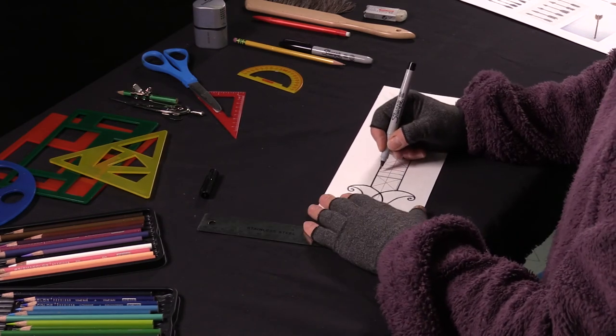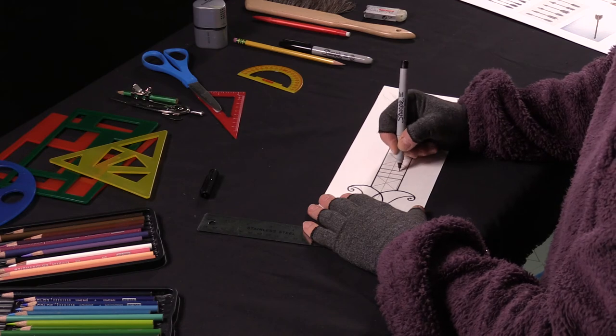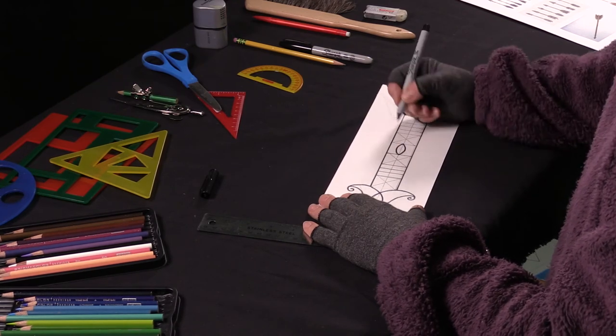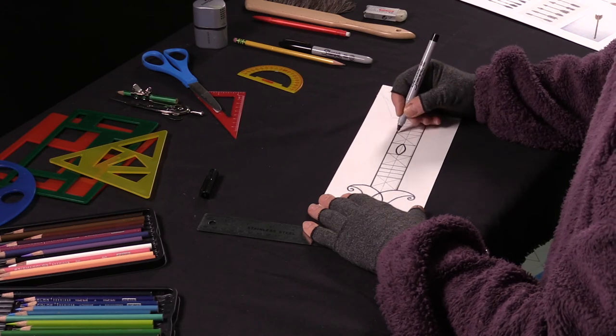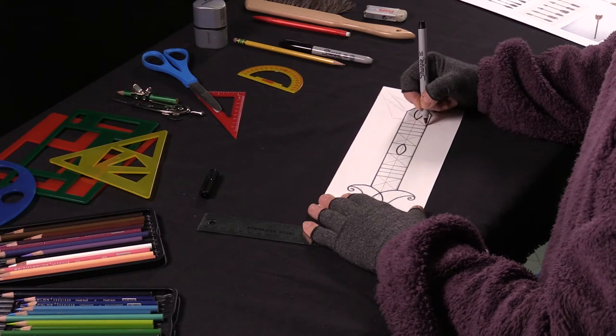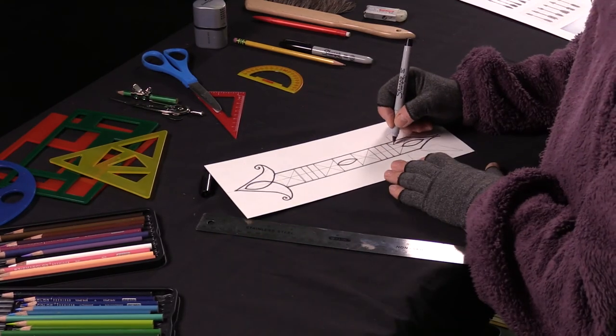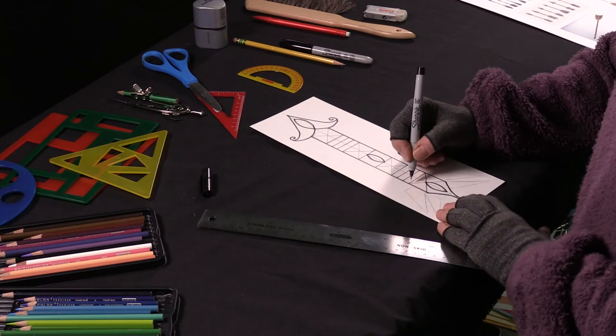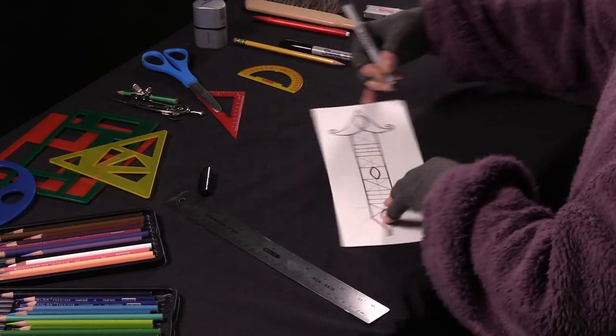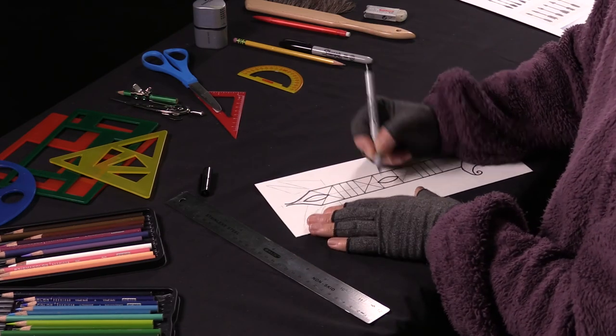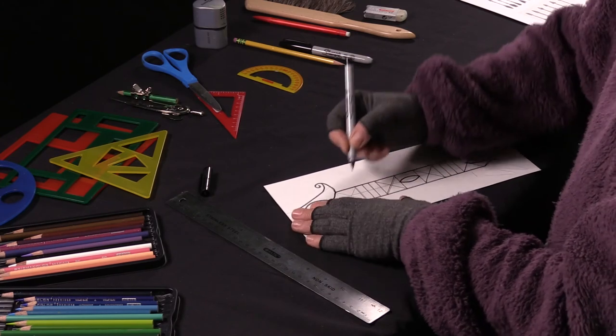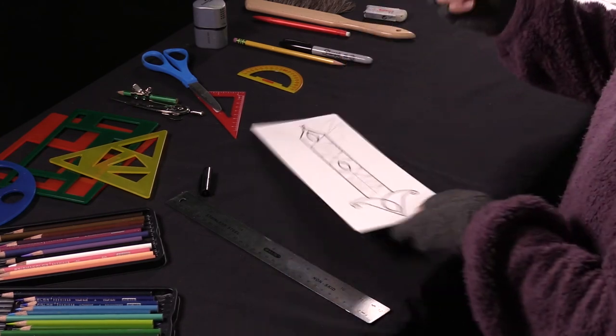And my ruler. Now, you don't have to use your ruler. So, if you trust your hand, you can just go over your lines like so. If you have a steady hand, I didn't mean trust your hand if you have a steady hand. Oh, I'm almost done.